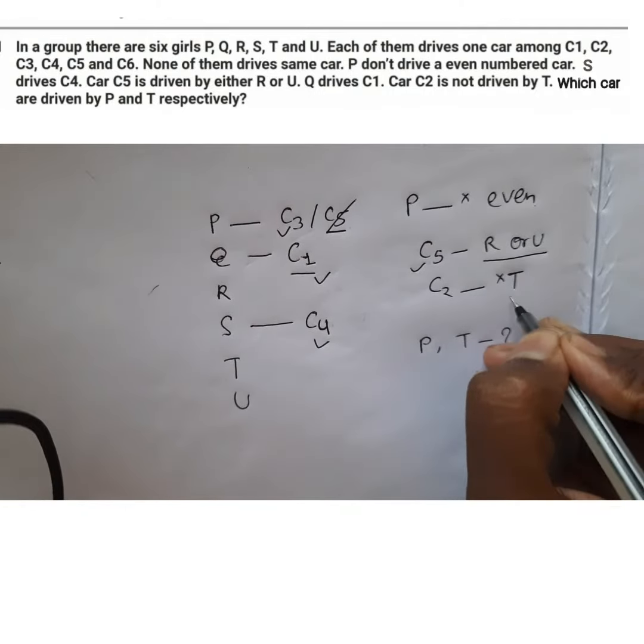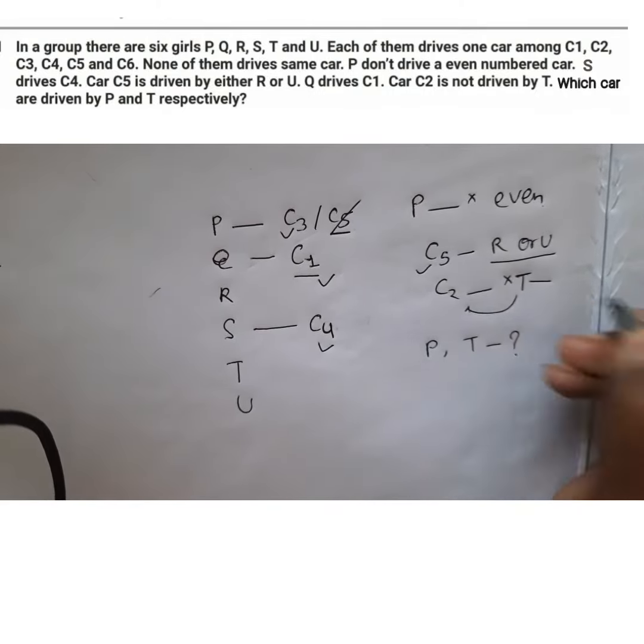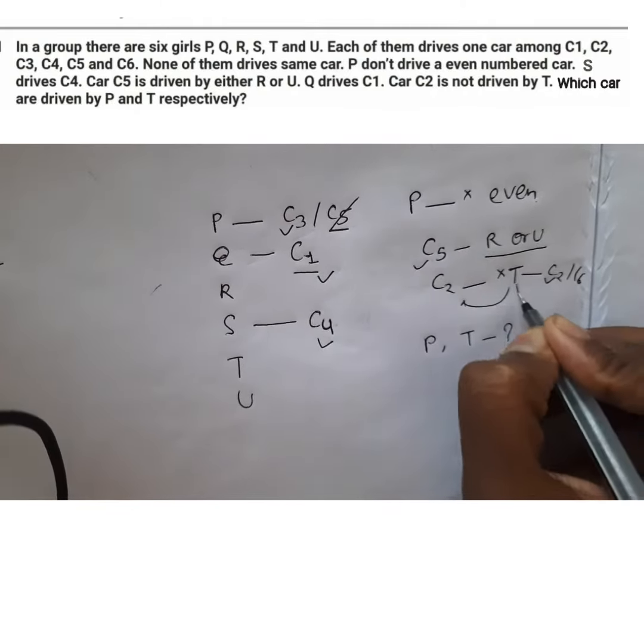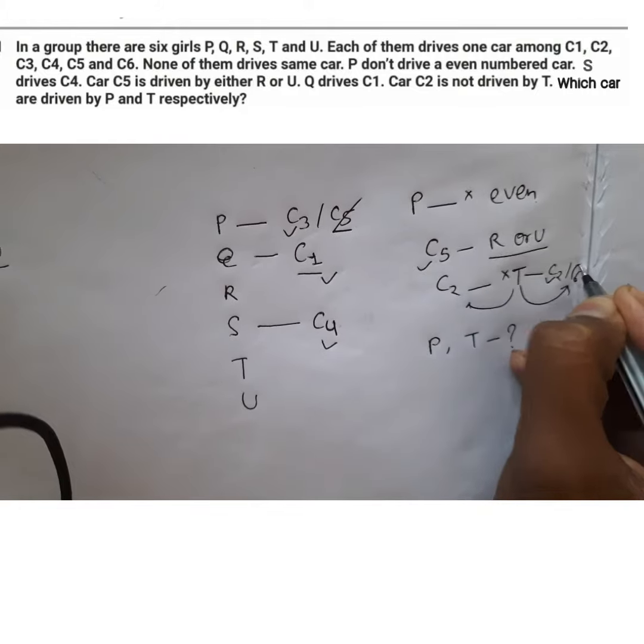T has only two options, C2 and C6. And C2 is eliminated. Hence, T is left with C6.